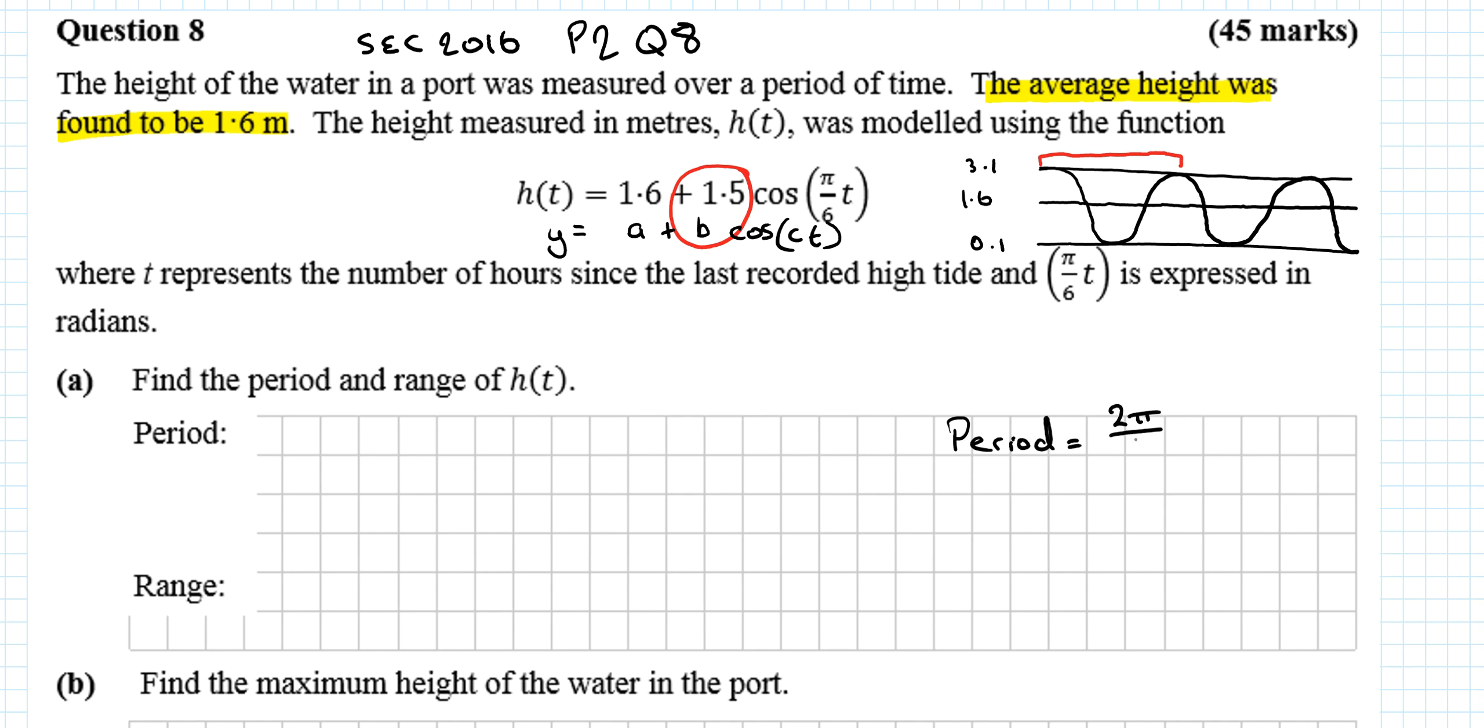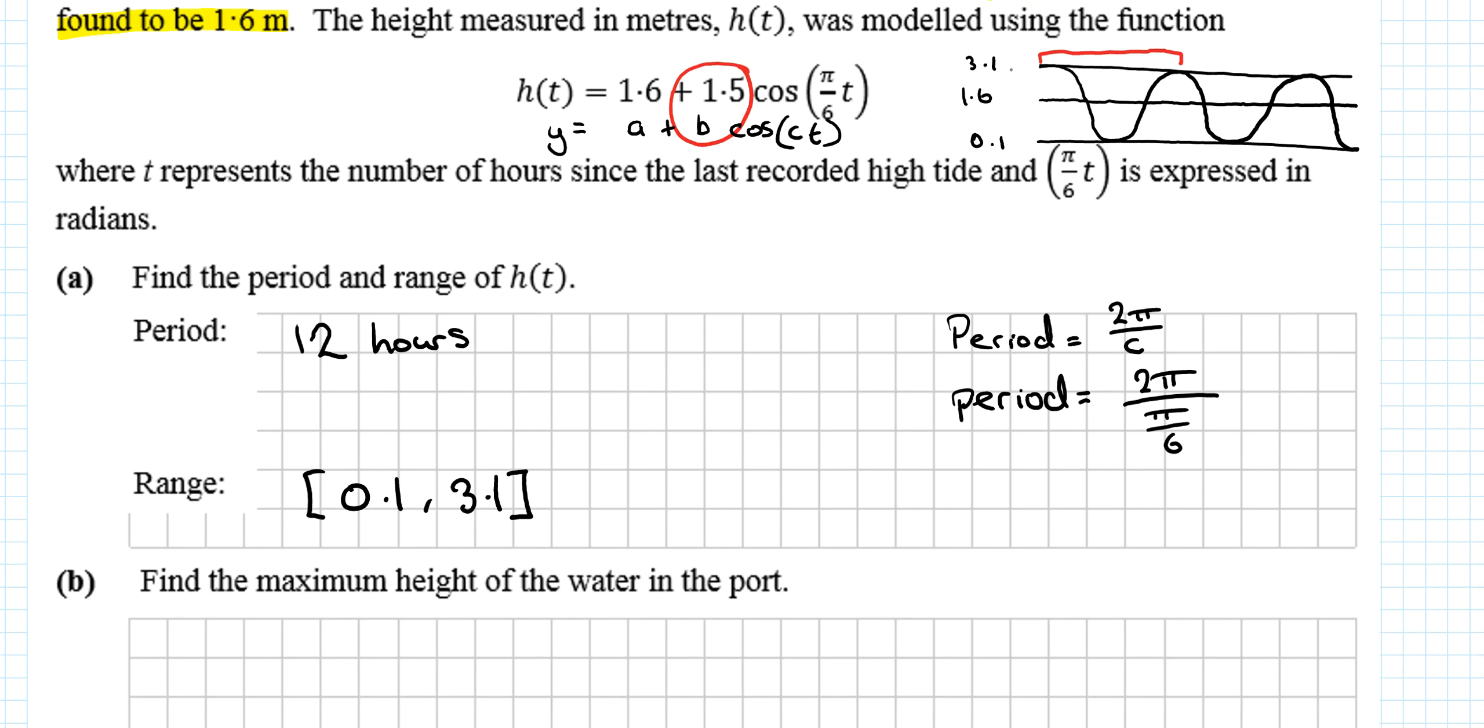The period is defined as 2π over c. So the period in this case is going to be 2π over π/6, and the period works out to be 12 hours. The range then is how far up and down it goes. We start at the smallest number, so it's [0.1, 3.1]. Find the maximum height of the water in the port - that's 3.1 meters.